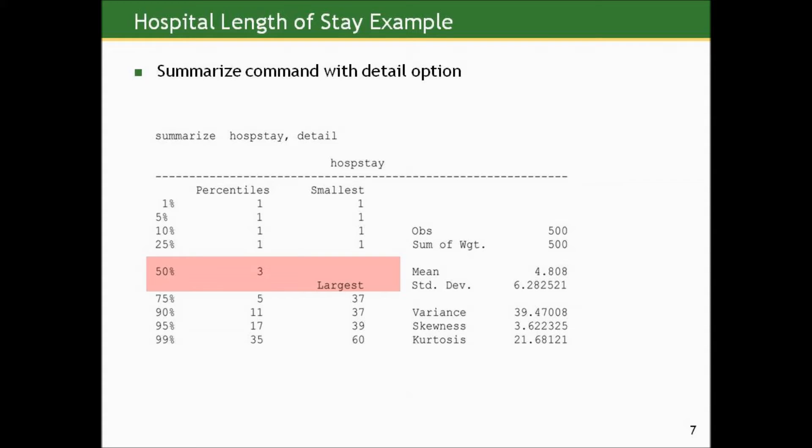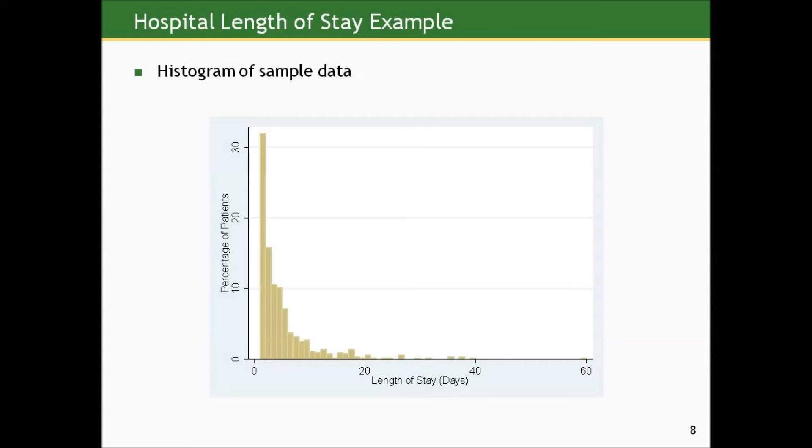Let's refresh ourselves with what the distribution of these values looked like. We take the histogram of the sample data, and now we see what our numbers gave some indication of, that we've got a pretty right skewed or positively skewed distribution.